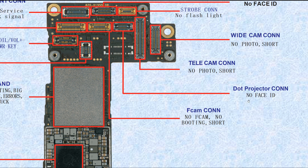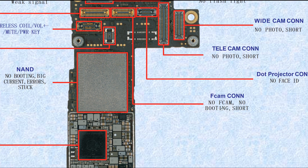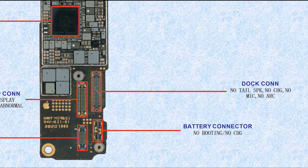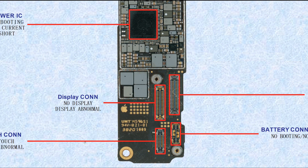This one is the dot projector connector — if broken, it causes no Face ID or move a little higher or lower. This connector is the front camera connector — if broken, it causes no front camera, no booting, or sometimes a short. This one is the dock connector — if broken, it causes no bottom speaker, no charging, no microphone, or no vibration. This one is the battery connector — if broken, it causes no booting or no charging.